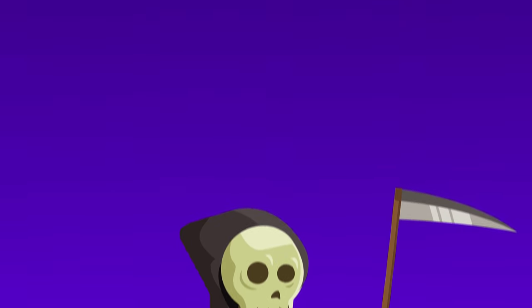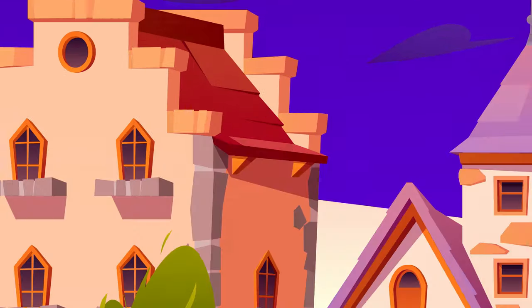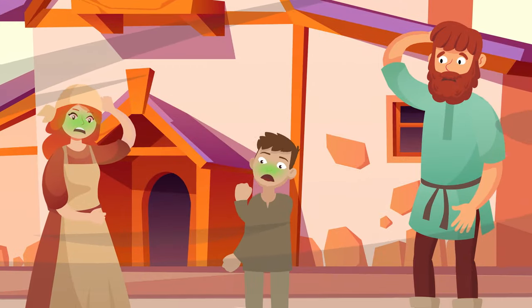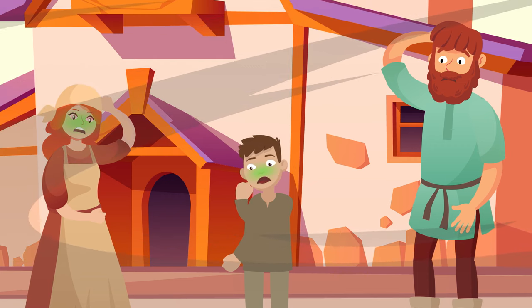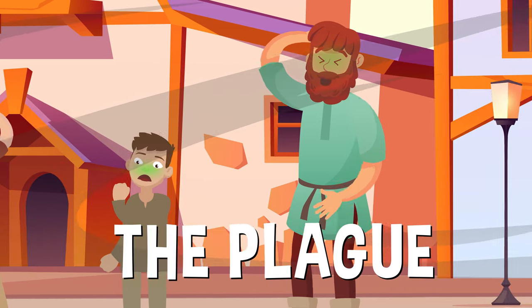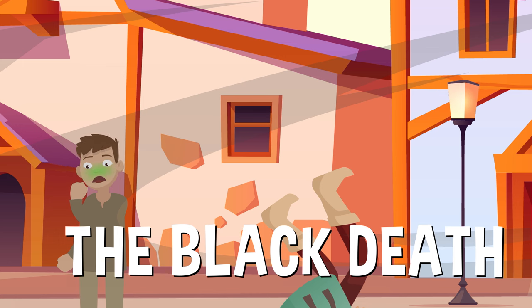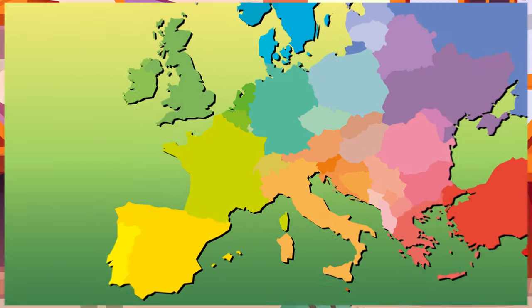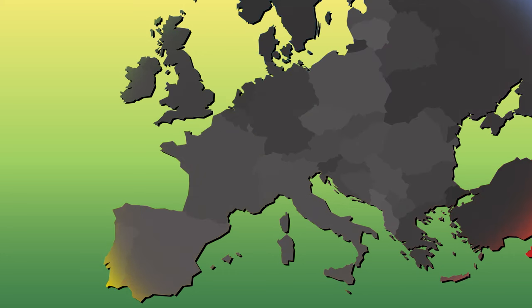No one can say for sure exactly when the Grim Reaper first started to appear in art and literature, but he seems to have first become popular across Europe in the 1300s, and for a particular reason: the plague. Also called the Black Death, the plague of the Middle Ages started in the mid-1300s and killed millions of people, and remains one of the deadliest pandemics in human history.